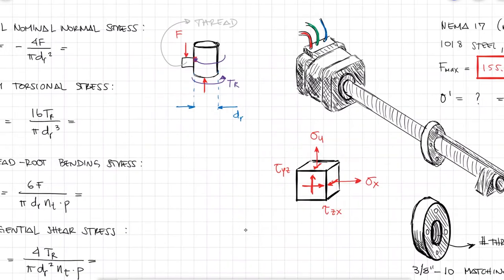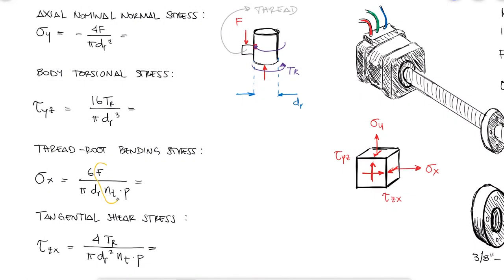For this reason, we're not dividing the input load by the total number of engaged threads, but we calculate that von Mises stress for the stress element of the first engaged thread, where both the thread root bending stress and the tangential shear stress are carrying 38% of the load.